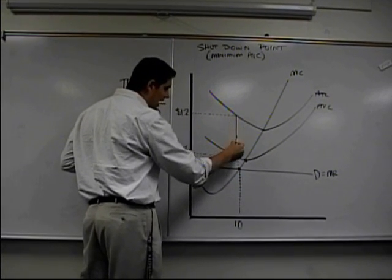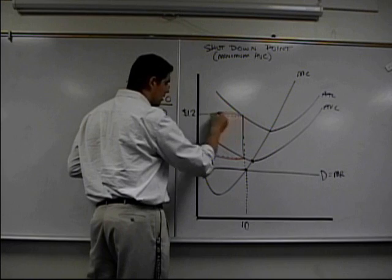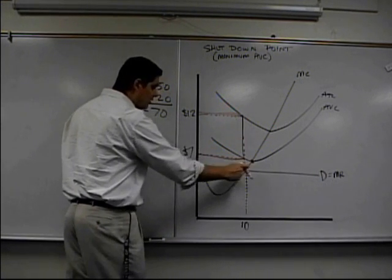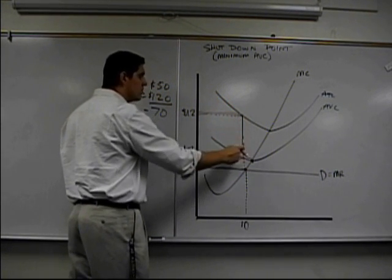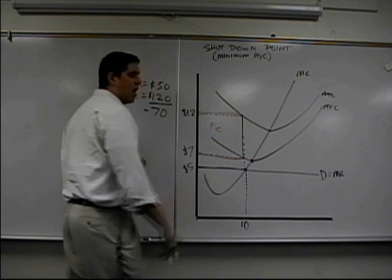they should take a loss the size of that. A loss of 70 is all the way down here. This loss is a little smaller. This loss is their fixed cost. How do I know?